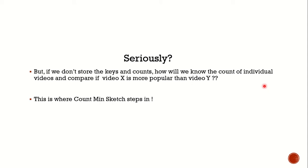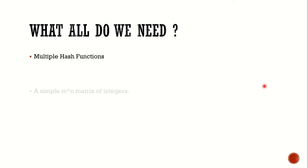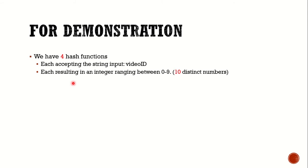To understand how Count Min Sketch solves the problem, we need two things: multiple hash functions, and a simple m-by-n matrix of integers. For demonstration, we are taking four hash functions, each accepting a string input — that is, a video ID — and each resulting in an integer between 0 and 9. So we have four hash functions each producing 10 distinct numbers, and that is why our matrix is of size 4 by 10.